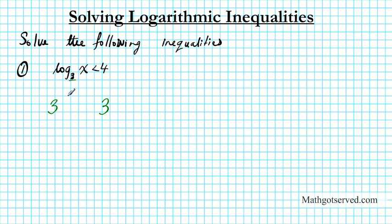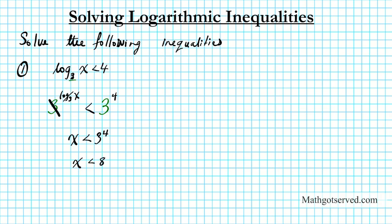So both sides get exponentiated. We have log base 3 of x is less than 4. These two are inverses so they cancel each other out. So we have x is less than 3 to the 4th power. We know that 3 to the 4th power is 81. So x is less than 81 is your final result.